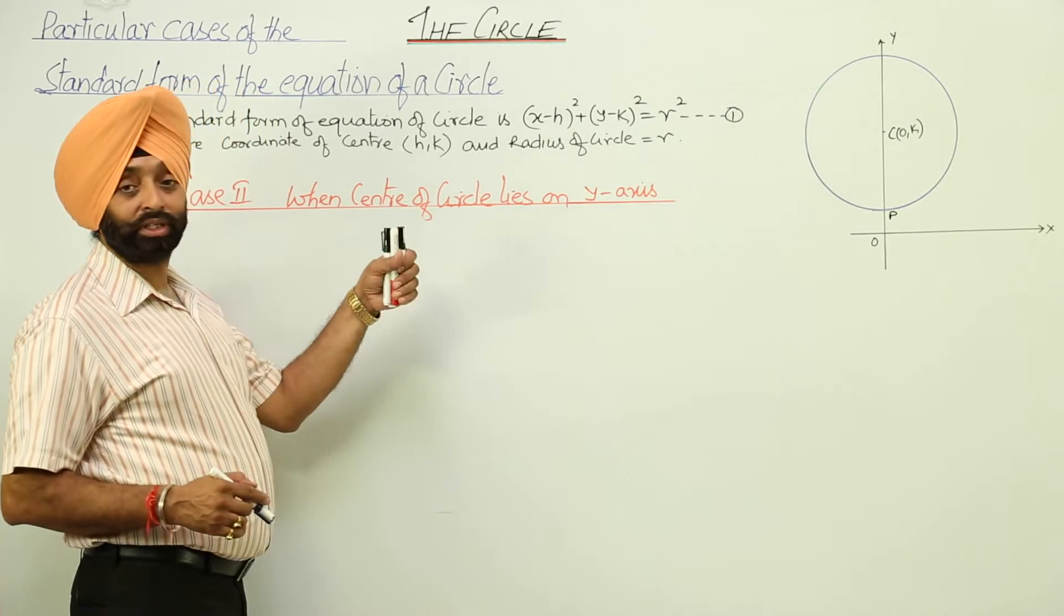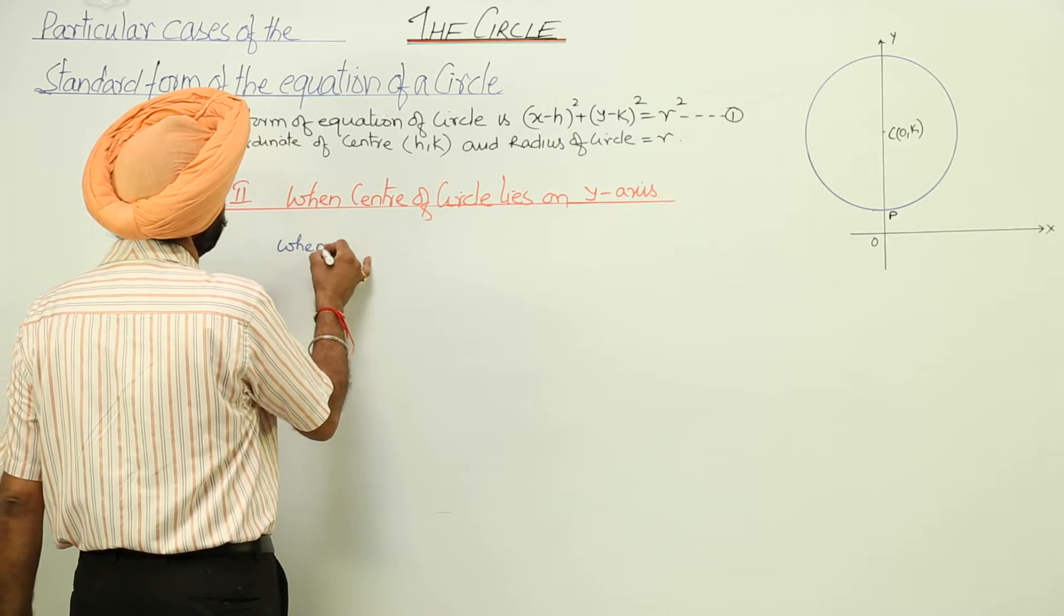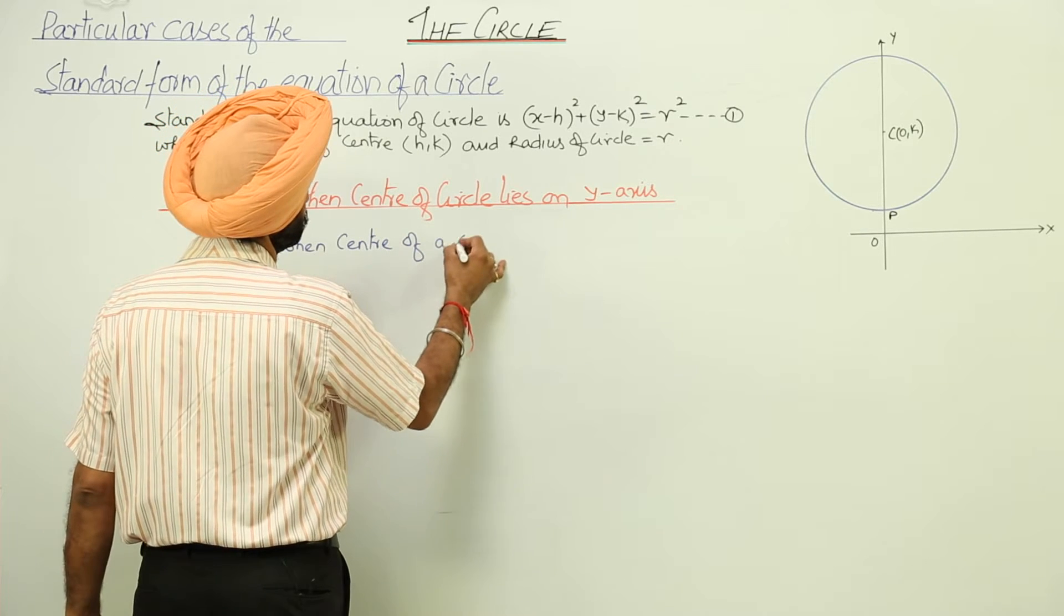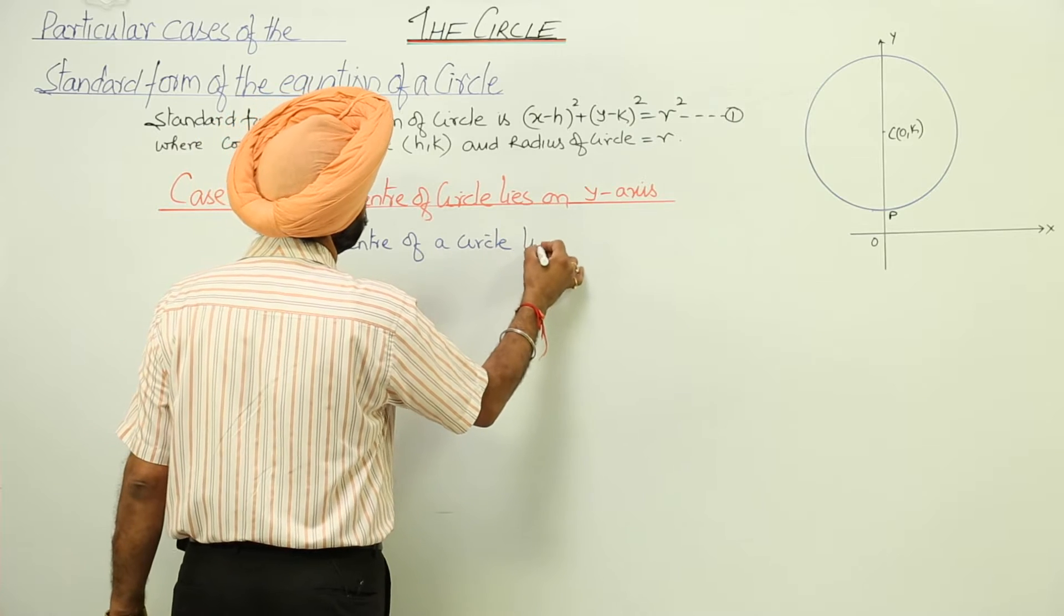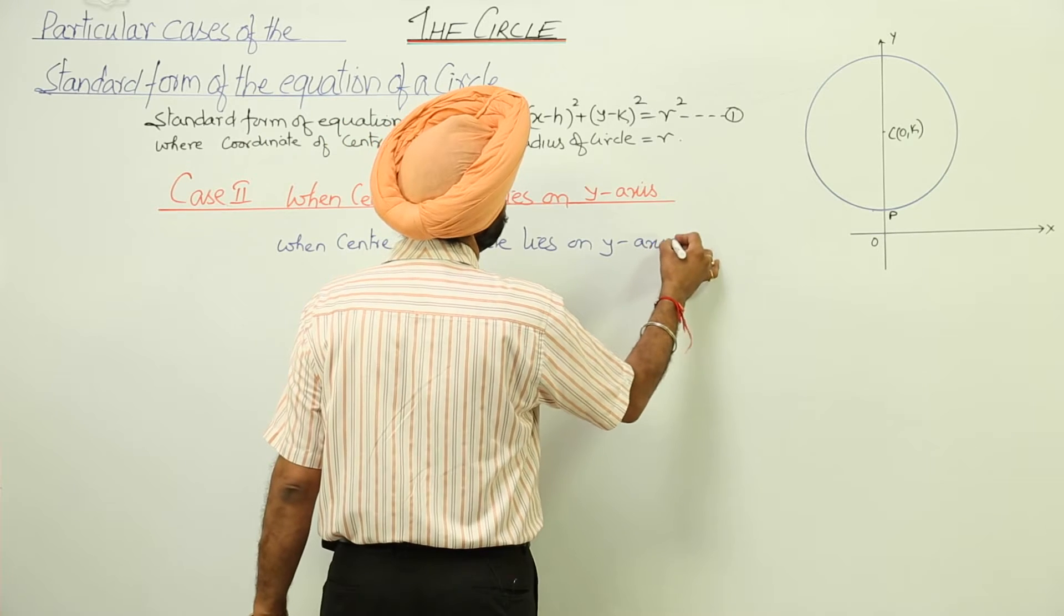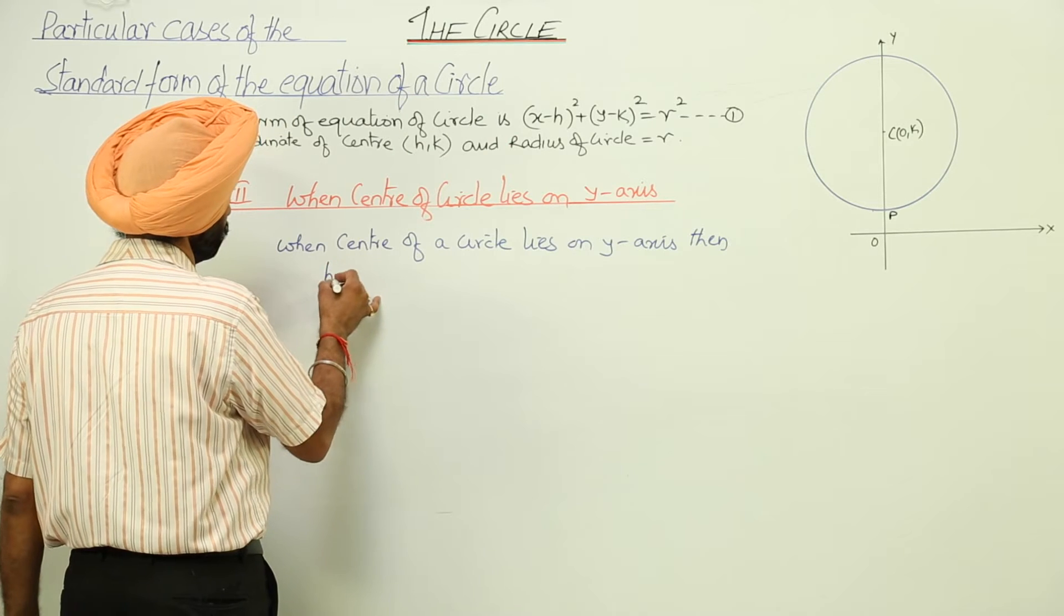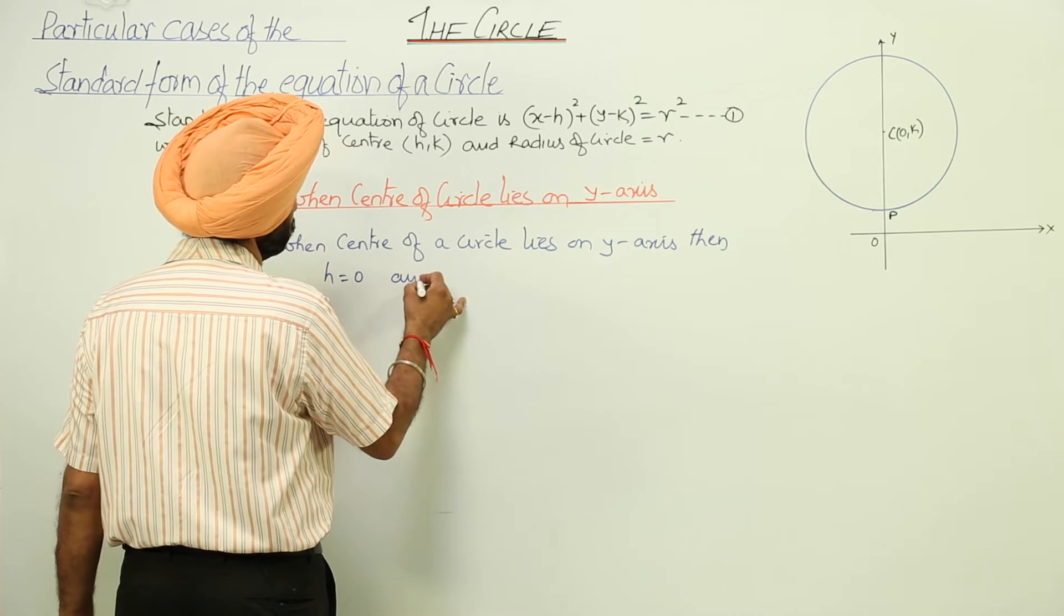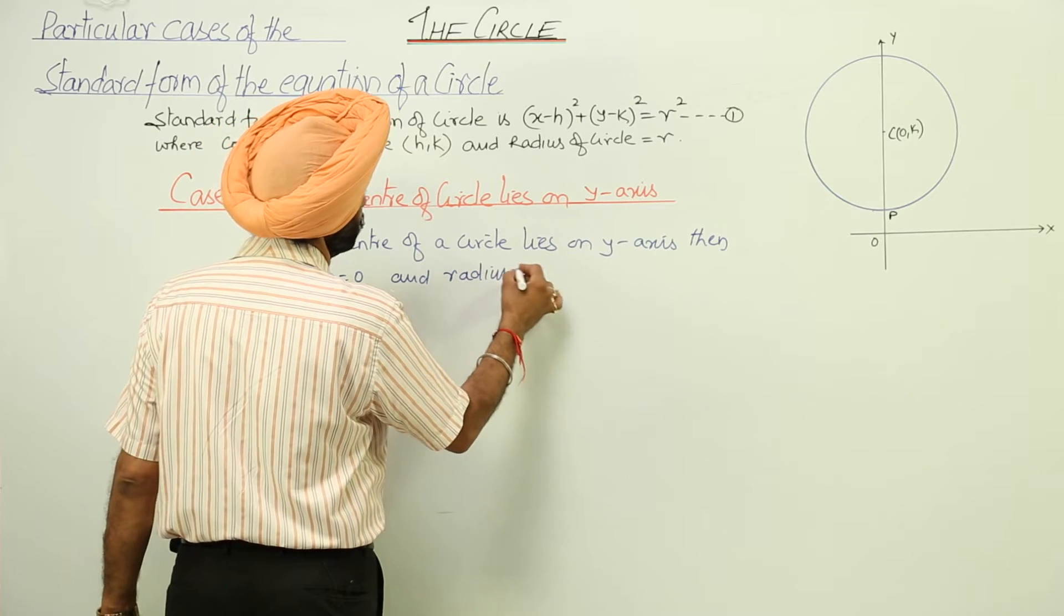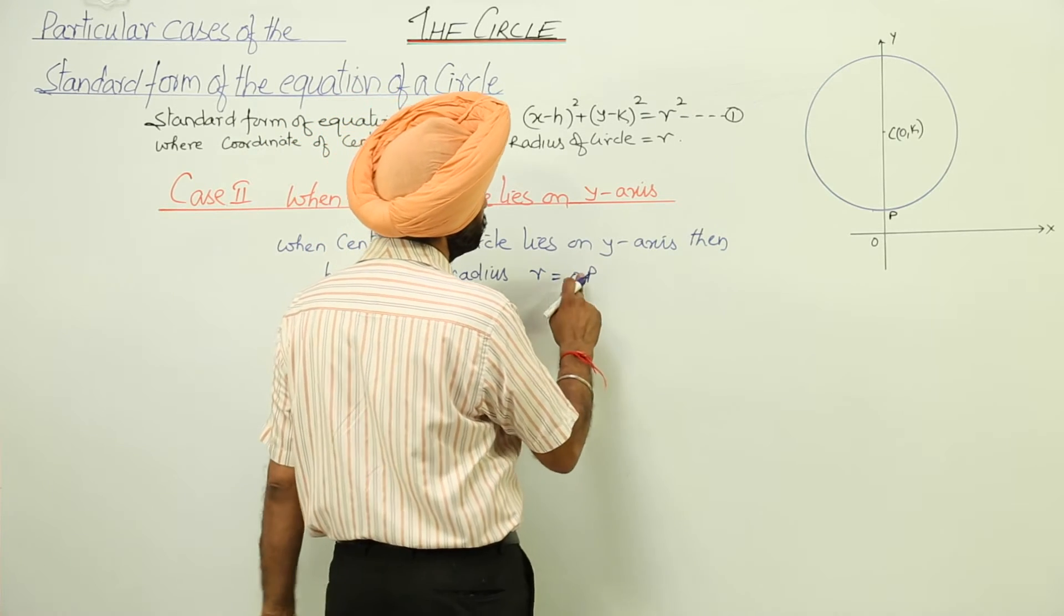Now, case 2: when center of circle lies on the y-axis. When center of a circle lies on y-axis, then h is equal to 0 and radius r is equal to CP.